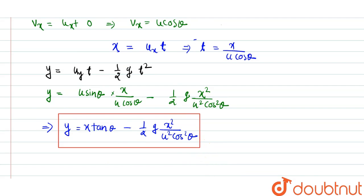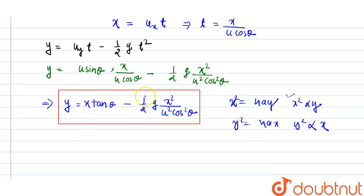This equation represents a parabola because we know that for any parabola equation, that is x square equals 4ay, that is x square directly proportional to y, and y square equals 4ax, that is y square directly proportional to x.